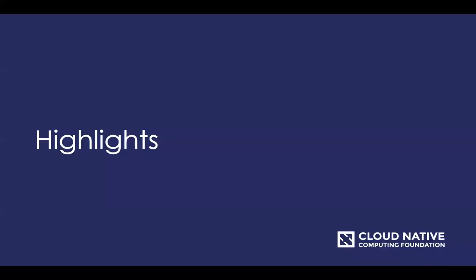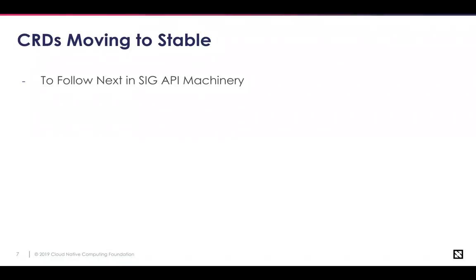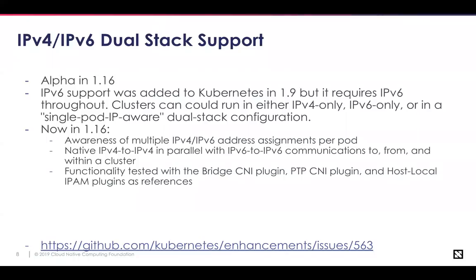Let's look at three highlights — some of the biggest things from this release. First was a bunch happening with custom resource definitions, which will take place across individual SIGs, with many CRD mechanisms moving to stable in 1.16. Next is looking at IPv4 and IPv6 dual stack support. The adoption of IPv6 has increased over recent years and people are requesting this type of support within Kubernetes.